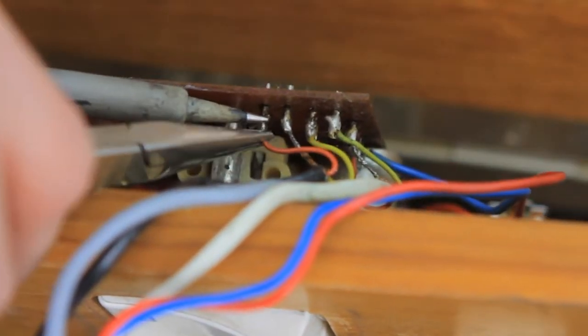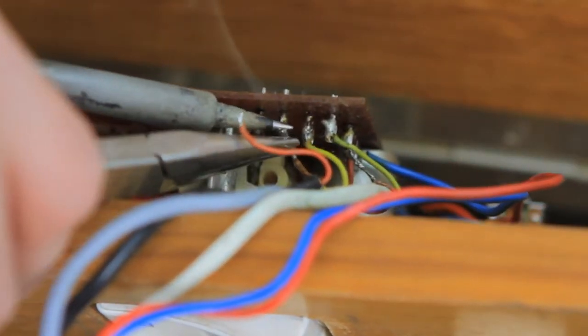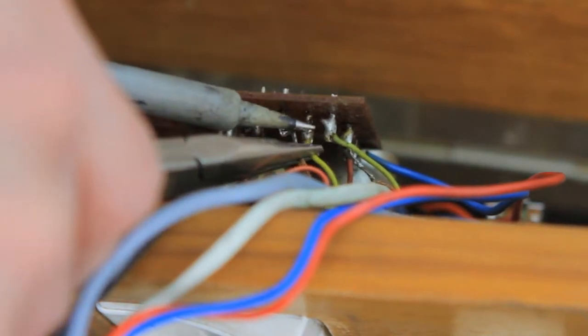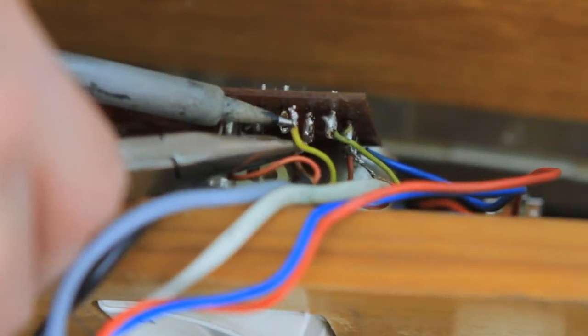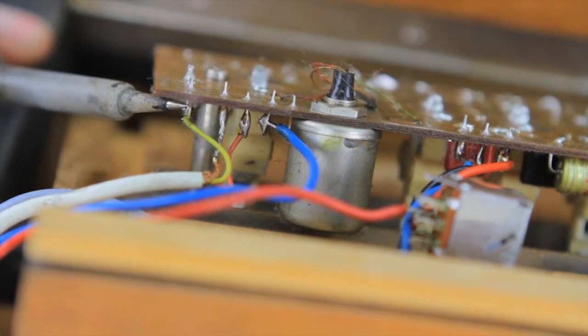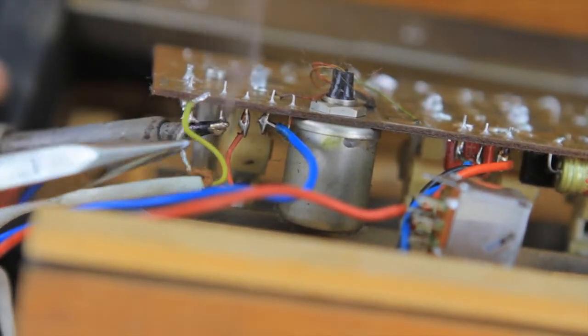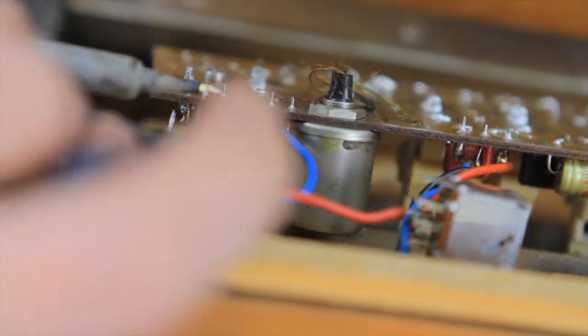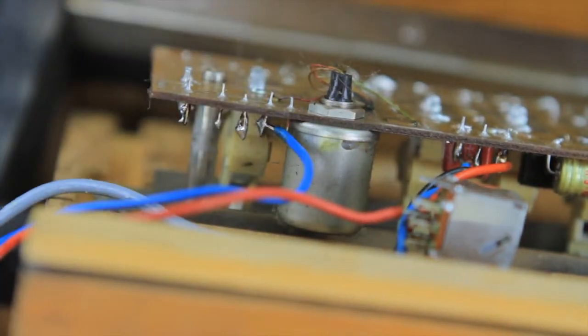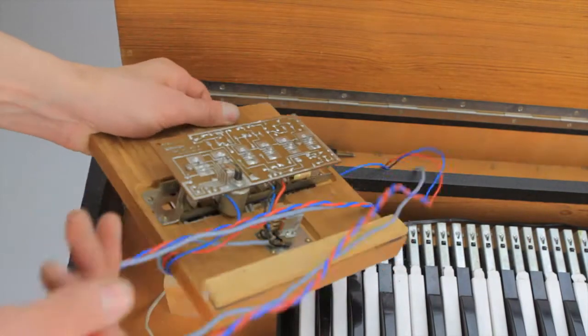Now you'll desolder the pickup wires from the preamp. You might want to take a photograph or make a drawing of where the wires were for your records. Now you can remove your old preamp for storage.